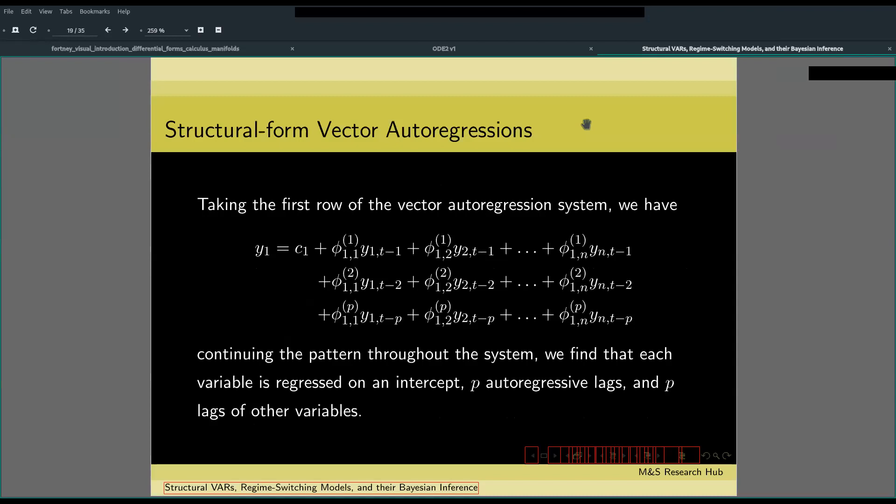Now what a vector autoregression simply is, is that we estimate each dependent variable using its own lags and the lags of other dependent variables.